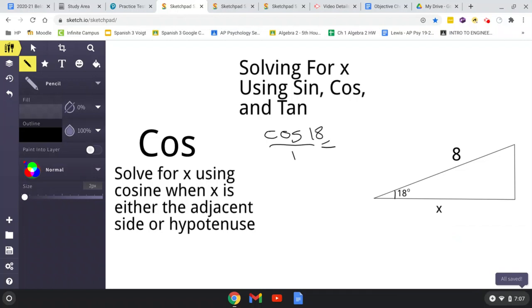So, we start with cosine of 18 over 1 equals... Now, for cosine, it's adjacent over hypotenuse. Alright, so our adjacent value is right here, x, x over hypotenuse, 8. Okay, so x over 8.